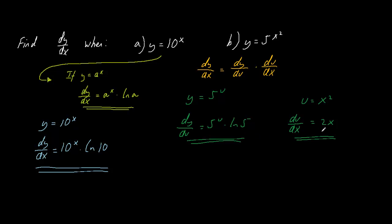Multiplying these together, dy/dx = dy/du * du/dx = 5^(x²) * ln(5) * 2x. This is the answer and how you differentiate y = 5^(x²).